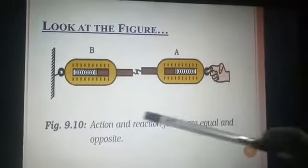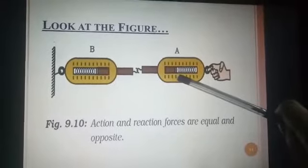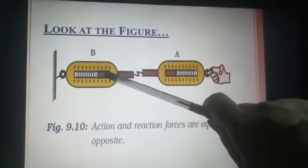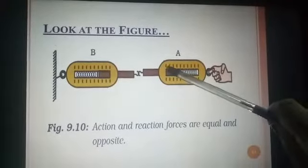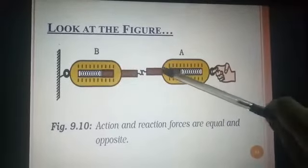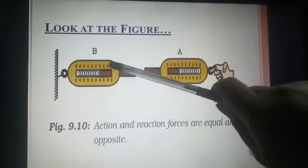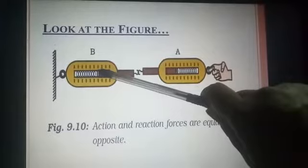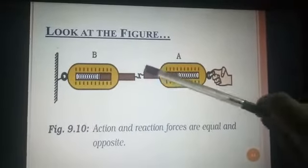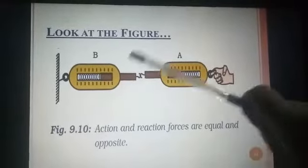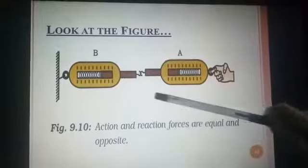All these are interlinked. The action is done by the hand — that means action is felt in spring balance A, and then reaction is observed in spring balance B. After action and reaction, what is happening? The readings are 1, 2, 3, 4 — they are four equal readings. Forces are equal but opposite — action force in one direction, reaction force in the opposite direction.